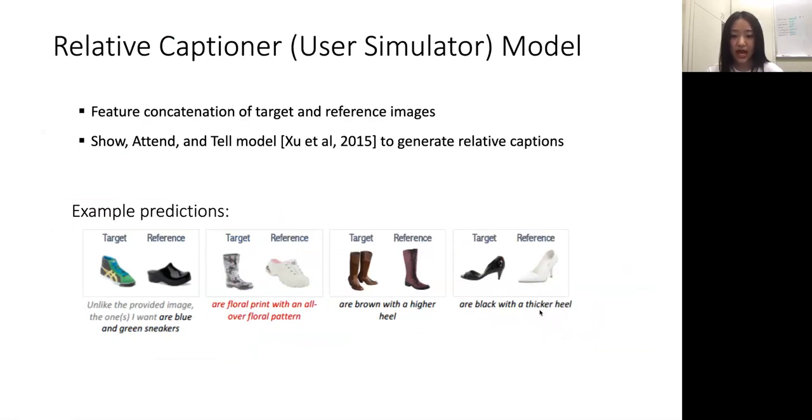Given this training data, we applied a captioning model. The captioning model takes as input the feature concatenation of both images. Here you can see some examples of generated captions from the user simulator. Sometimes this user simulator can make mistakes, just like regular image captioning models. But overall, we find that they can serve as a good proxy for real users, and most importantly, allow us to train the network with little to no annotation cost.